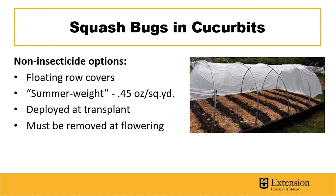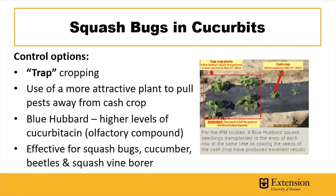You want to secure the edges so the cover doesn't blow up in the wind, which would give insects opportunities to fly or crawl underneath. The important thing to note is that these row covers really do need to be removed at flowering — if they're not removed at flowering, you're not going to get fruit set on your squash or other cucurbits.